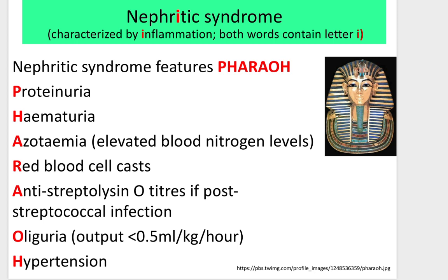The features of nephritic syndrome can be characterized by the mnemonic PHARAOH: P — proteinuria, H — hematuria, A — azotemia, R — red blood cell casts, A — antistreptolysin O titer if post-streptococcal infection, O — oliguria, H — hypertension.